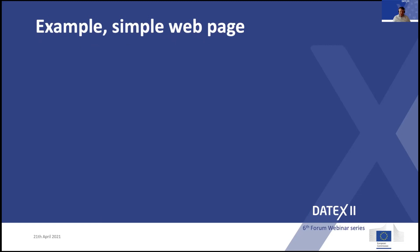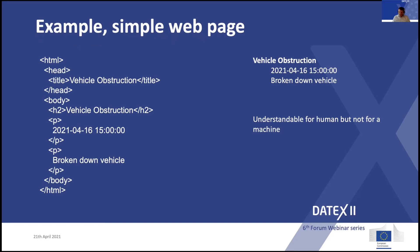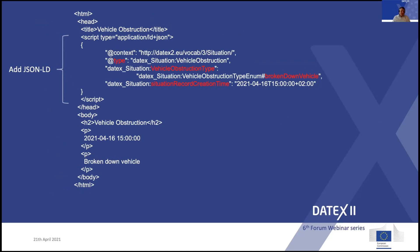Now I'll show what we are trying to do with DATEX in this world, using a very simplified example. This is a stripped HTML page — a web page — and the result is a title 'vehicle obstruction', a date-time, and the text 'broken down vehicle'. This is somewhat understandable for a human but difficult for a machine, because it's just text, and in Swedish we would probably display something else. But if we add some structured data — as I've done in this example — I've added a JSON-LD script. The script is not visible to a human, but it is to a machine. So here we tag the data.